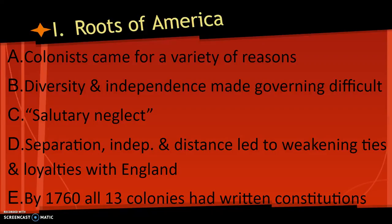When the colonists came, they each came for different reasons, and the diversity and the dependence in the colonies made governing very difficult. The idea of salutary neglect and the separation and independence that the colonies felt, compelled by the distance as well, led to loyalties becoming less strong with England. By 1716, all 13 of the colonies did have written constitutions of their own.